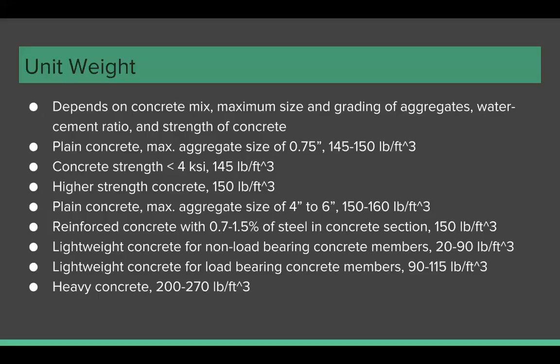The unit weight of heavy concrete varies between 200 and 270 pounds per cubic foot depending on the type of aggregate.